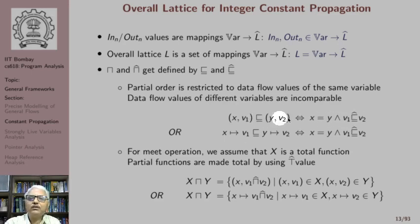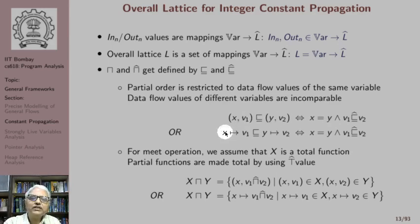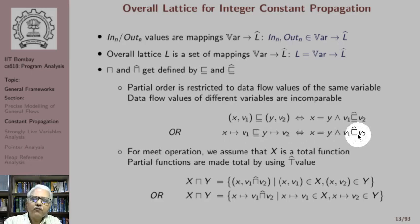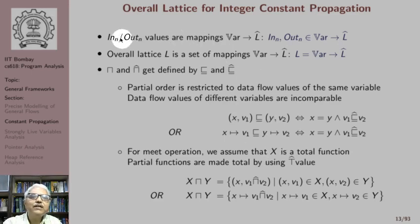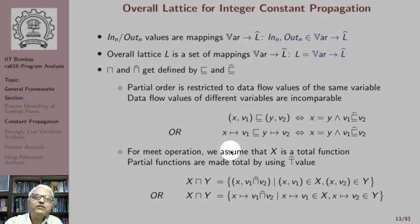The overall partial order is defined by pointwise or componentwise partial order over each variable. This notation says x maps to v1 is weaker than y maps to v2, provided x equals y and v1 is weaker than v2. For the meet operation, things become much simpler if we assume that x is a total function — meaning that in and out data flow variables are total functions, so some value is defined for every variable.